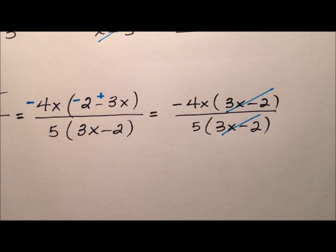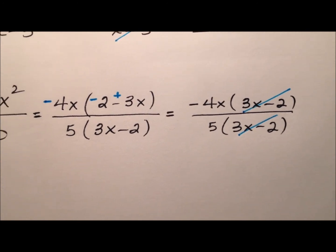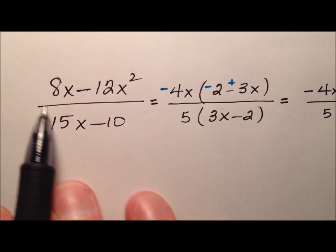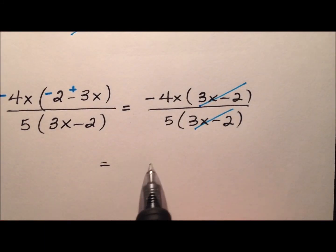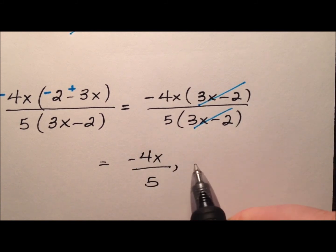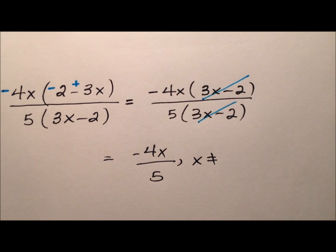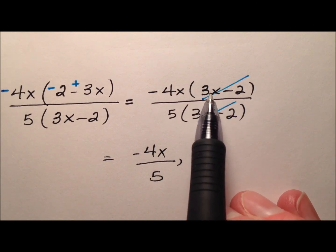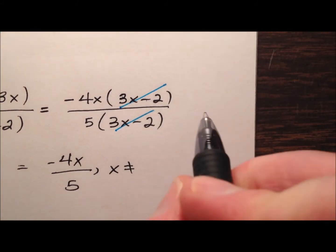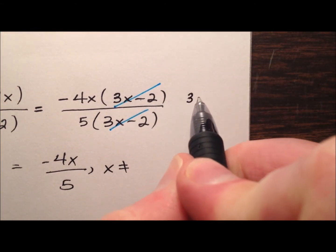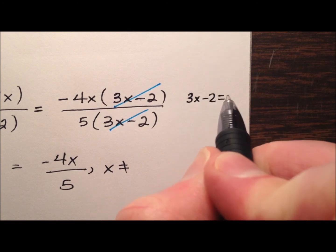So a couple things though, because I want to ensure that I have equivalent expressions. From this, when I cancel it down to essentially negative 4x over 5. But we do have one stipulation in the domain that x cannot equal. And it looks like because we canceled out 3x minus 2. Well, what makes 3x minus 2 equal to 0?